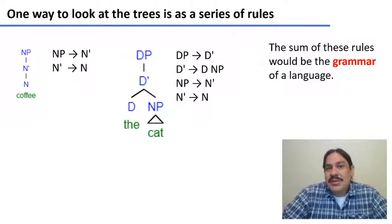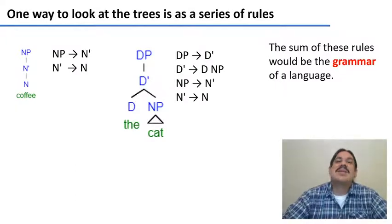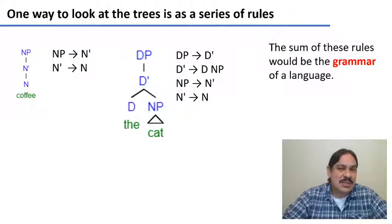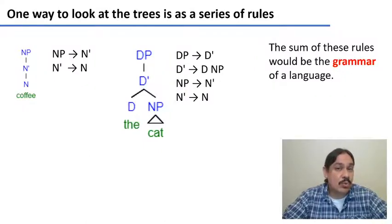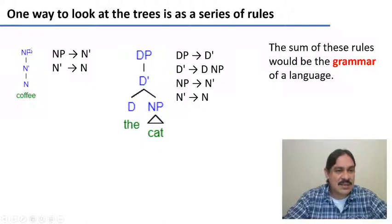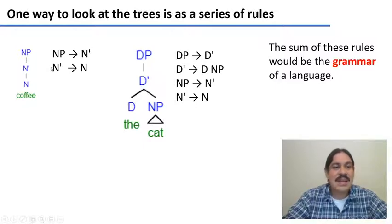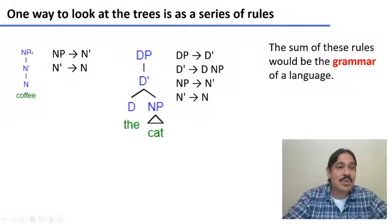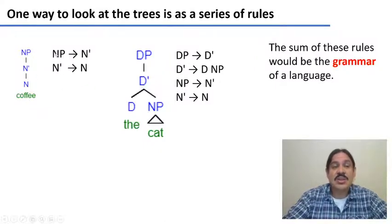So we've been drawing trees — lots of trees. But one way to look at trees is to imagine them as a series of rules. For example, we have a noun phrase, and we can imagine that the noun phrase is projecting a noun bar, and that the noun bar is projecting a noun. So this structure — the noun phrase for 'coffee' — could be explained using these rules.